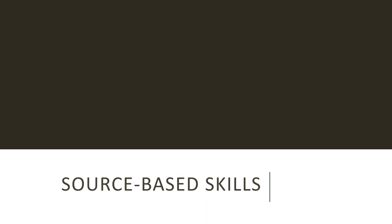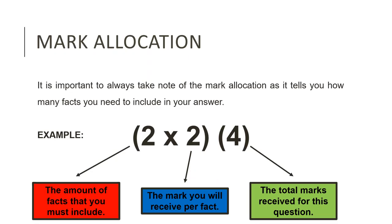In today's lesson, we're going to be revising some of these skills, specifically Level 1 and Level 2 questions. Let's start by taking a look at the mark allocation. When marking Grade 12 NSC History Paper 1, I often find that learners forget to take the mark allocation into consideration, which means many learners are throwing away marks unnecessarily. Mark allocation is very important because it tells you how much information the examiner wants you to write down.